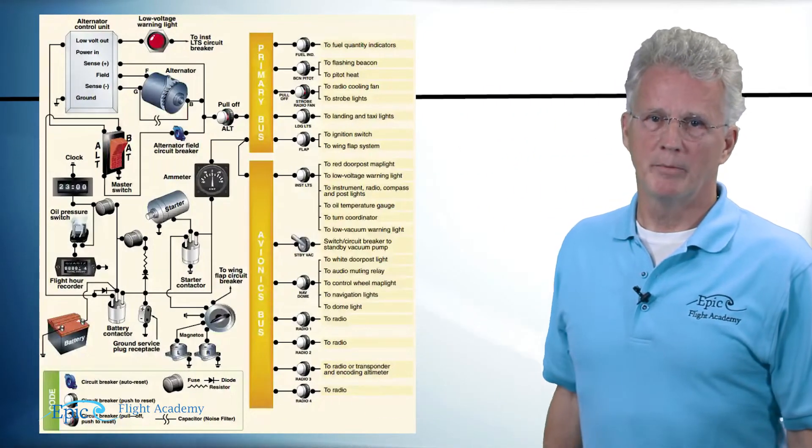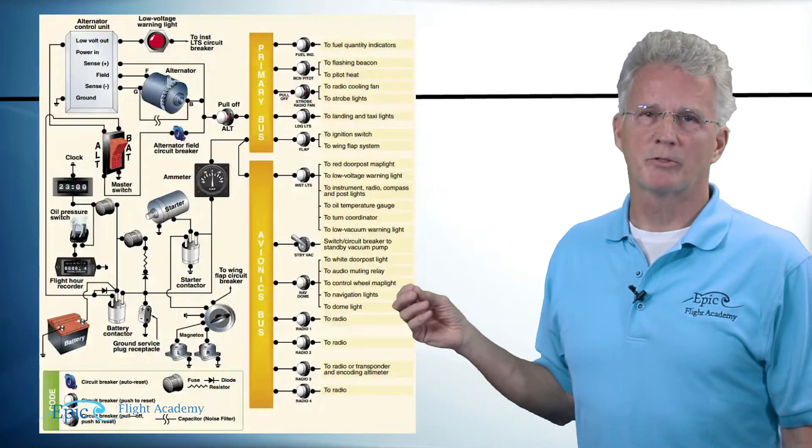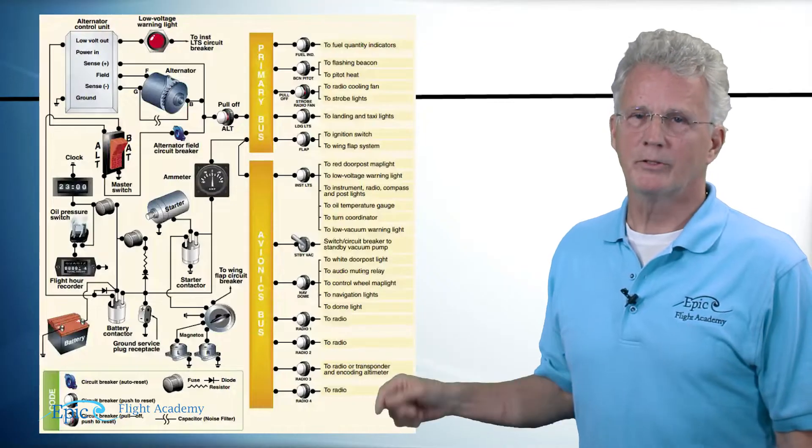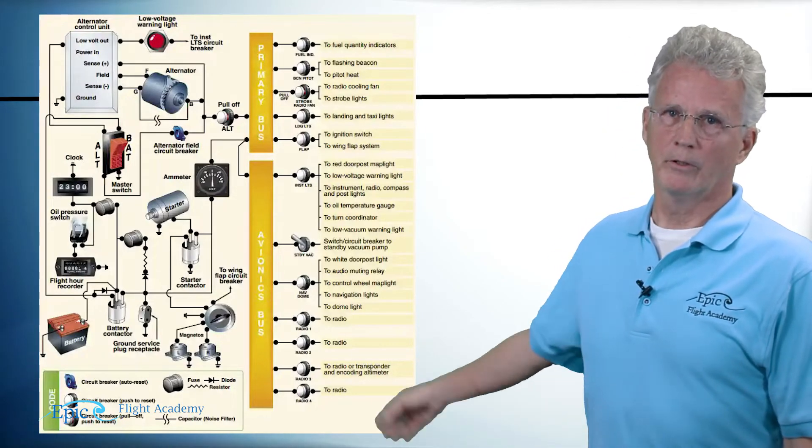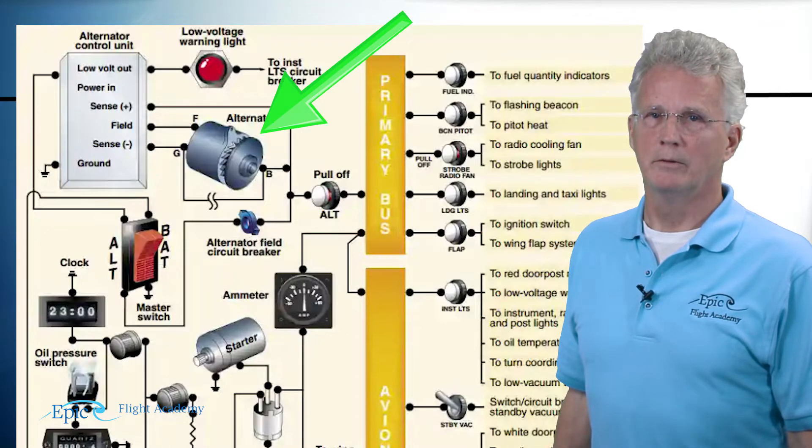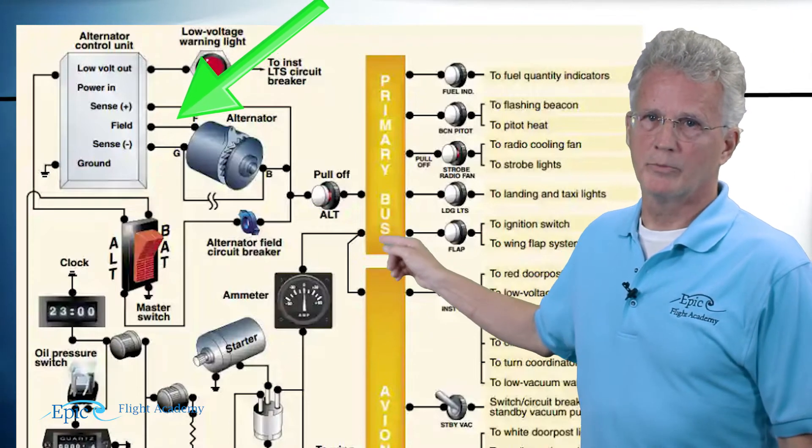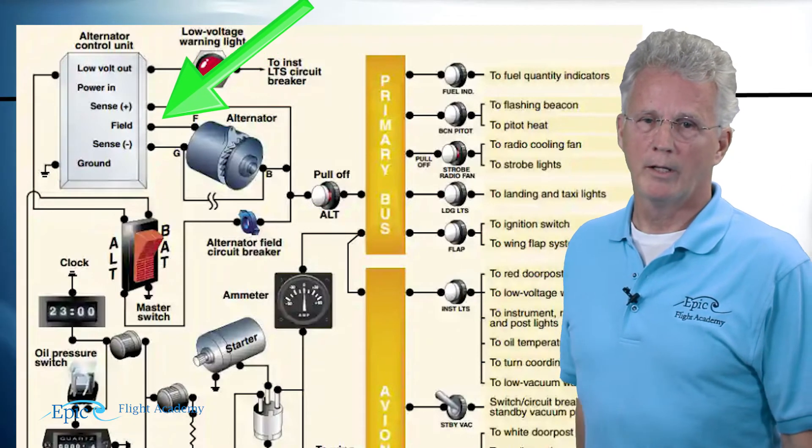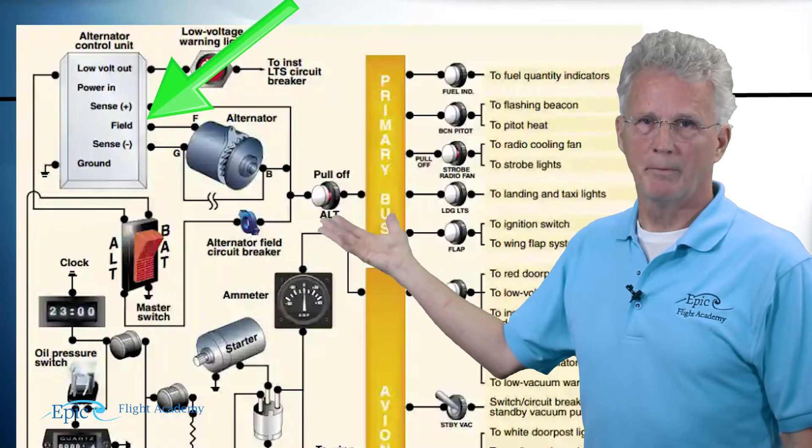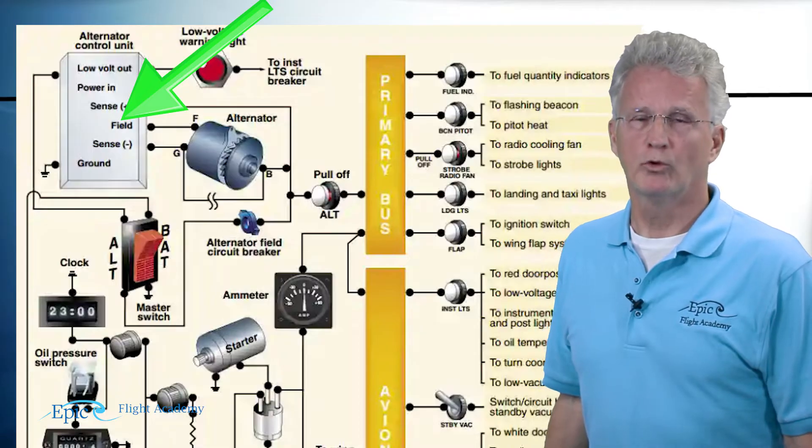Now looking at this general schematic, you see a lot of lines. Don't let that intimidate you. Each of these lines has a specific purpose. Let's start with the alternator. If you look near the top in the center, you see the alternator. The alternator's got three letters on it. The letter F - let's start with that. It comes off the alternator and it runs to this rectangular shape box called the alternator control unit.